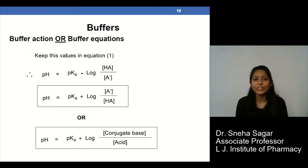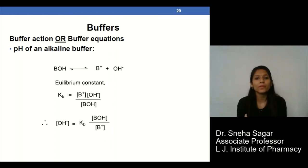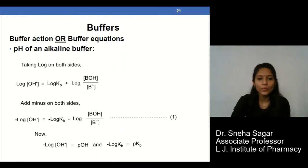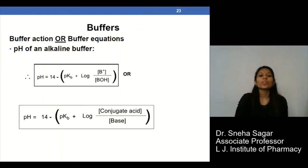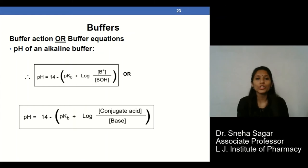After derivation we can get this buffer equation. For the alkaline buffer, taking BOH as the base, it can liberate B⁺ and OH⁻ ions at equilibrium. The equation obtained is: pH = 14 − pKb + log([B⁺]/[BOH]), which can also be expressed as pH = 14 − pKb + log(conjugate acid / base). By derivation of these two equations we obtain the pH values.